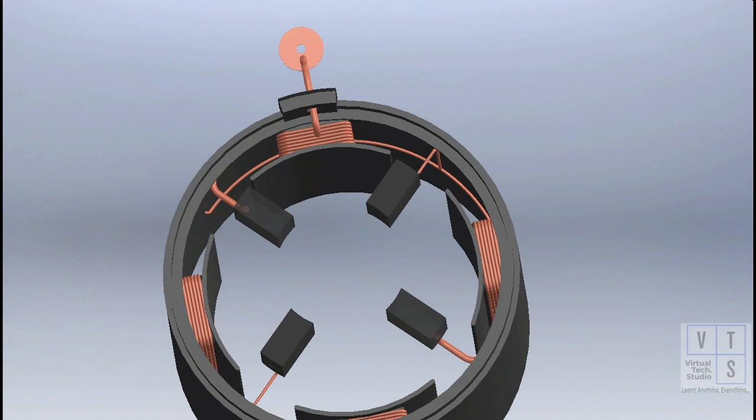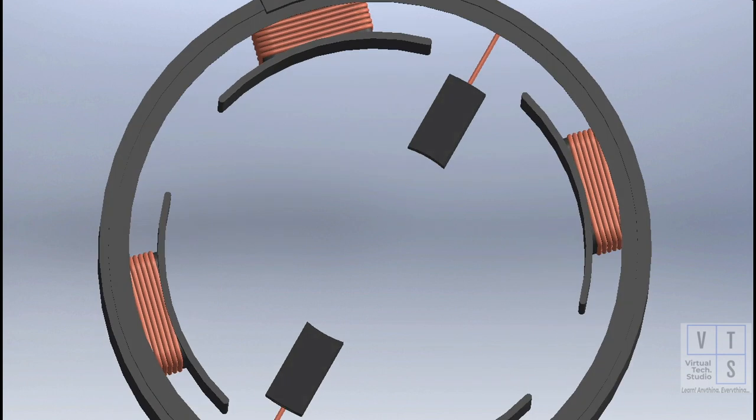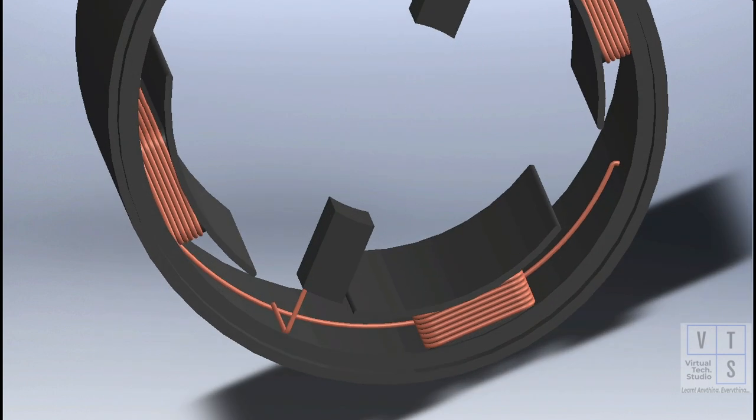There are two stator coils. Each coil has two windings. One end of each coil is body grounded and the other end is connected to the carbon brush.